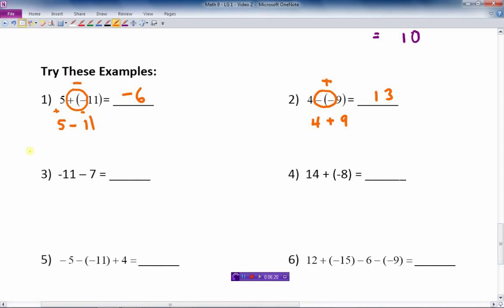Next one. Number 3. There's no duplicative signs. There's no double signs anywhere between the numbers. So I've got negative 11 minus 7. Both are negative. So add them together. Get 18. And they're both negative. So they make a bigger negative. Negative 11 minus 7 more gives you negative 18.